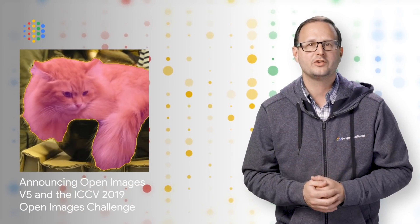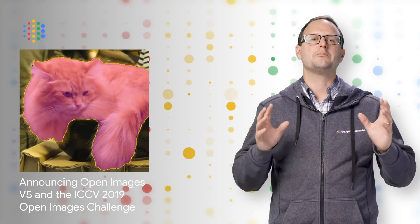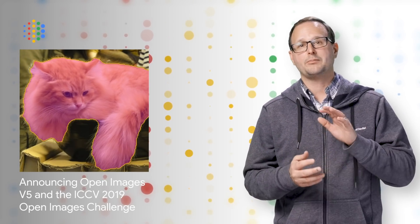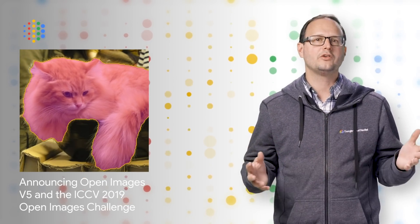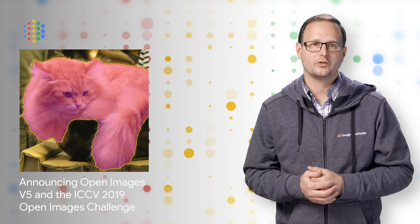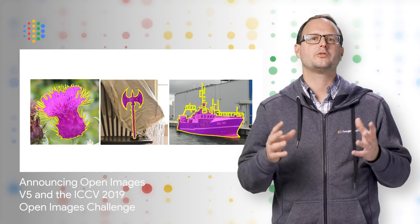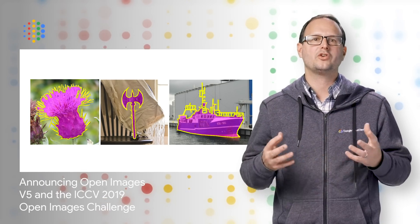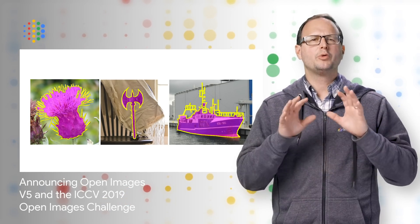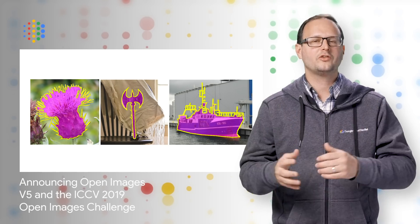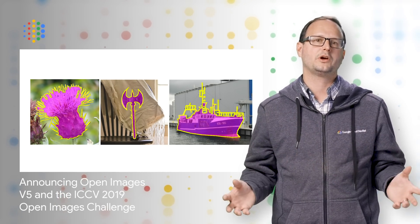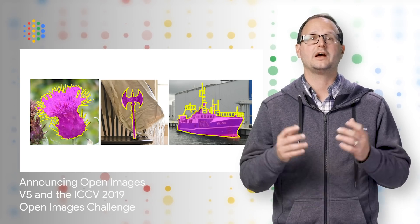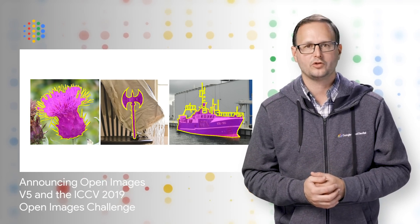Open Images V5 features segmentation masks for 2.8 million object instances in 350 categories. Unlike bounding boxes, which only identify regions in which an object is located, segmentation masks mark the outline of objects, characterising their spatial extent to a much higher level of detail. We've put particular effort into ensuring consistent annotations across different objects. Check out the post below to learn more about Open Images V5 and how you can participate in the Open Images Challenge.